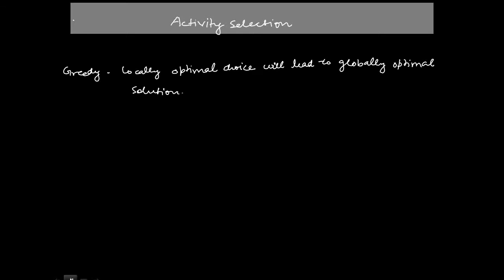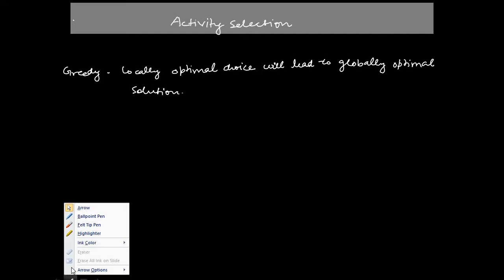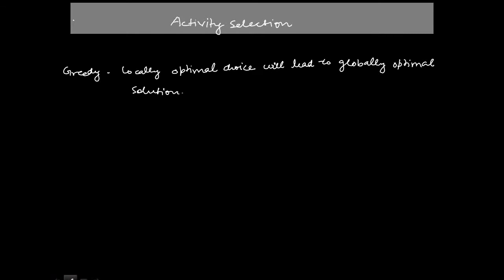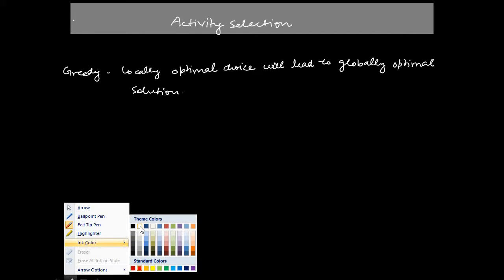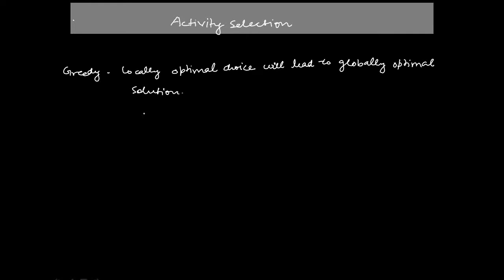Hello guys. In the previous lecture we learned about the basics of the Greedy algorithm. In this lecture we will discuss the first standard problem to solve by the Greedy algorithm, called the Activity Selection Problem. The Greedy algorithm has the concept that any locally optimal choice will lead to a globally optimal solution.